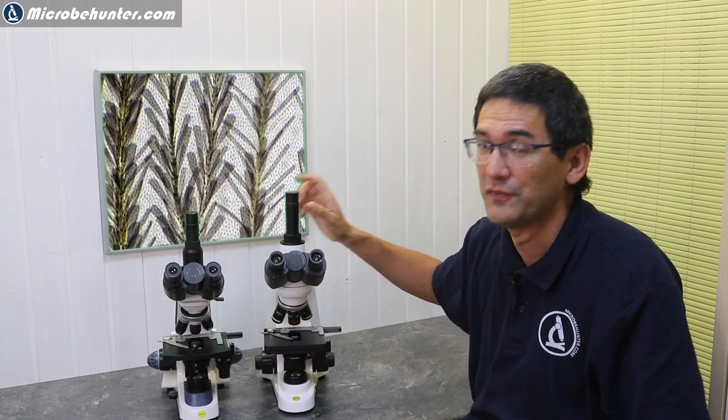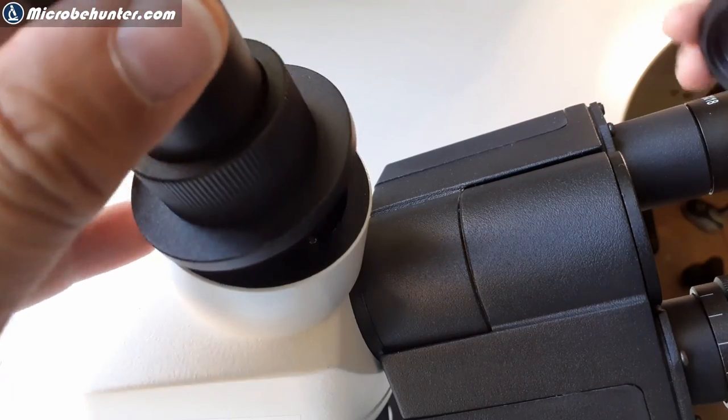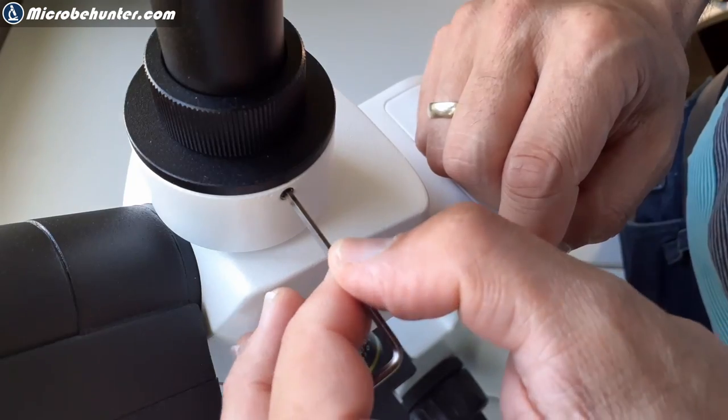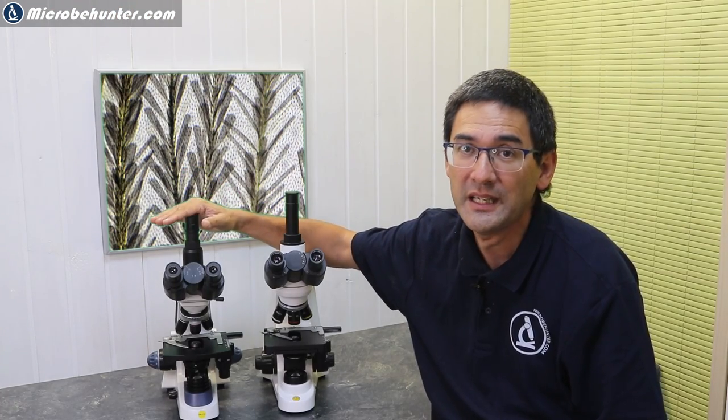This basically means that for storage purposes inside a cupboard you might take this into consideration, but it's also very easy to remove this top part of the photo tube, which makes it smaller. The same can be done with the other microscope, the 380T.